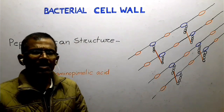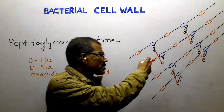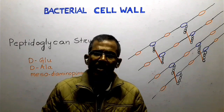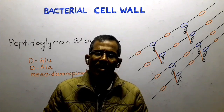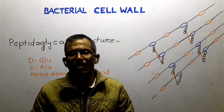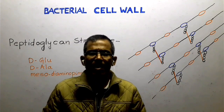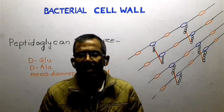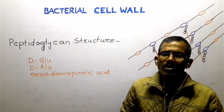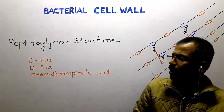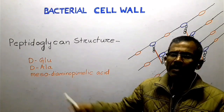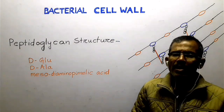Peptidoglycan is an enormous mesh-like polymer composed of many identical subunits. This polymer contains two sugar derivatives: N-acetylglucosamine and N-acetylmuramic acid, and several different amino acids. Three of these amino acids are not found in proteins — they are D-glutamic acid, D-alanine, and mesodiaminopimelic acid.